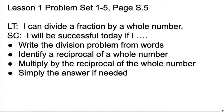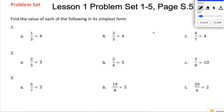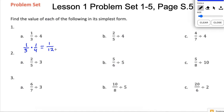Let's look at the first ones. On Problem 1, parts A and B — remember we talked about how we can change them to a multiplication problem. We have 1 third divided by 4, which means splitting 1 third into 4 equal parts. That is the same as multiplying by 1 fourth, and 1 fourth is the reciprocal of 4. So we multiply straight across: 1 times 1 is 1, and 3 times 4 is 12, giving us 1 twelfth.